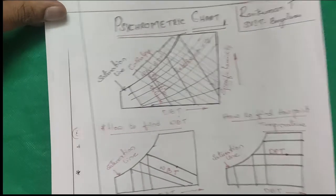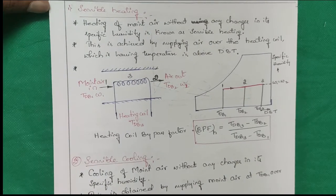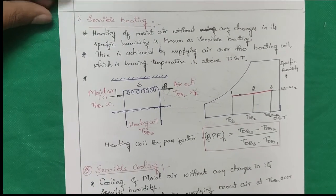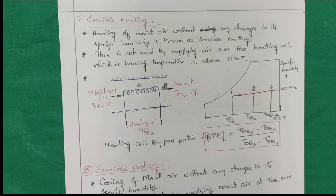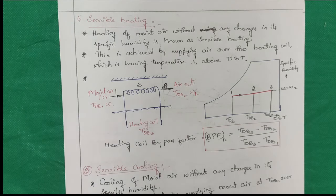What is sensible heating? Sensible heating means temperature increases at constant humidity. Temperature increases at constant humidity — that is what sensible heating is.